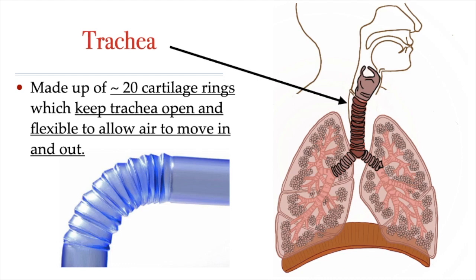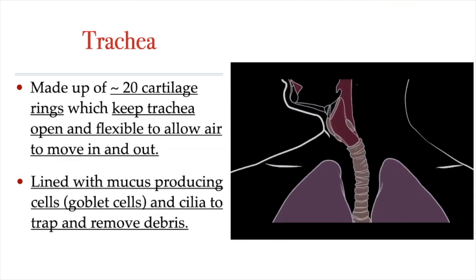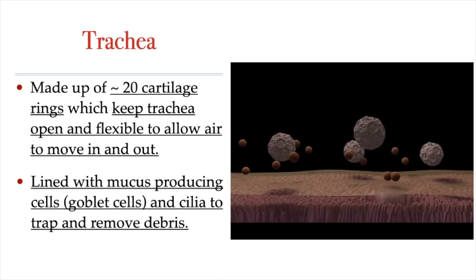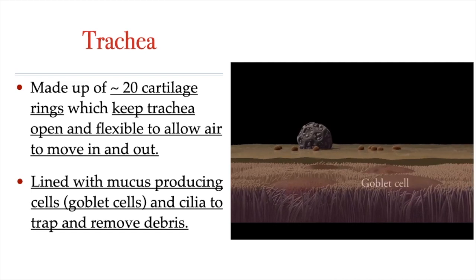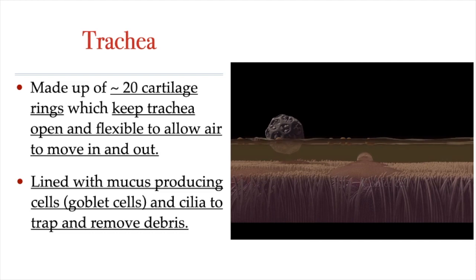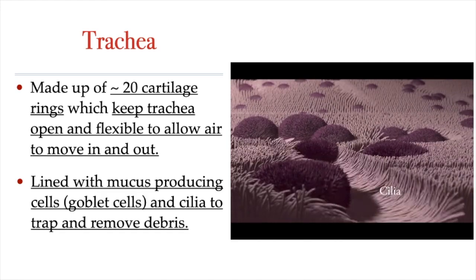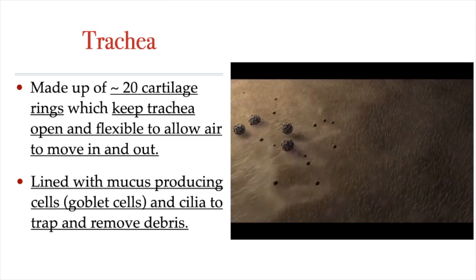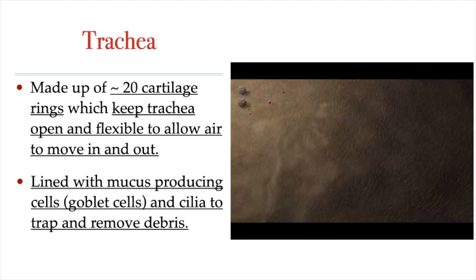So the cartilage rings of the trachea make the trachea like the bendy part of a straw — strong, yet flexible, keeping the airways open even when it bends. The trachea also plays an important role in cleaning the air about to reach the lungs. On the inside, the trachea is lined with mucus-producing cells called goblet cells. The mucus traps any dust, pollen, or debris in the air. The inside of the trachea is also lined with hair-like projections called cilia, which are constantly moving, sweeping any mucus, fluids, and foreign particles away from the lungs and towards the throat.